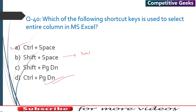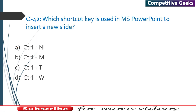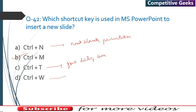Question 41: Which shortcut key is used to view the slide show in MS PowerPoint? Answer: F5. Question 42: Which shortcut key is used to insert a new slide in MS PowerPoint? Answer: Ctrl+M. Ctrl+N creates a new blank presentation. Ctrl+T opens the Font dialog box, and Ctrl+W closes the presentation.